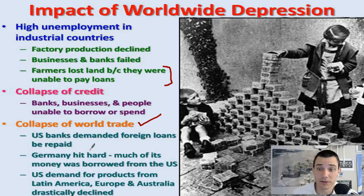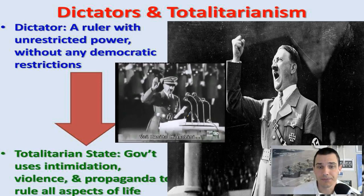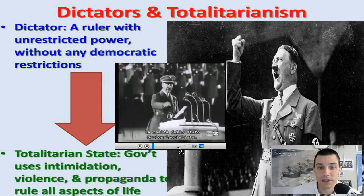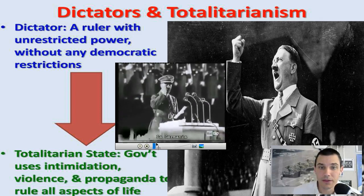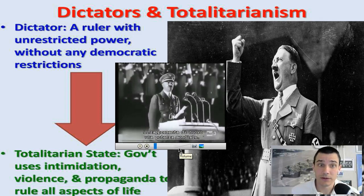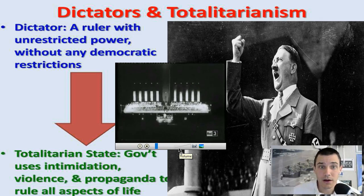Germany still has the burden of the Treaty of Versailles — they have to pay back all these reparations — and then you have this hyperinflation hitting Germany really hard. The people of Germany are really getting hit hard. Some people think it's a result of this depression, but there are also other factors: the rise of dictators. A dictator is a ruler with unrestricted power without any democratic restrictions.